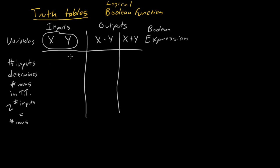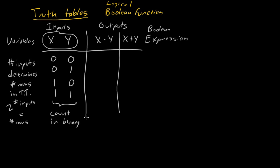The way we fill in the input rows is by counting in binary. So I say zero, one, zero, one in one column, and zero, zero, one, one in the other. If I always keep this order of inputs the same, I can just look at the outputs and know what function I'm dealing with.